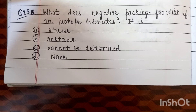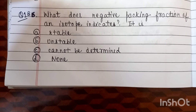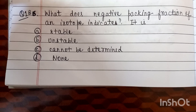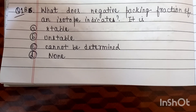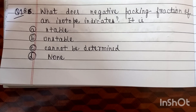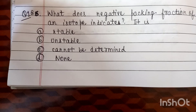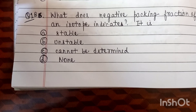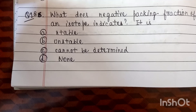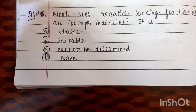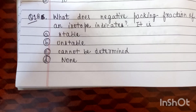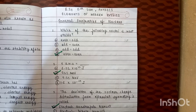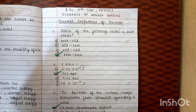Question number 18: what does a negative packing fraction of an isotope indicate? Option A: stable. Option B: unstable. Option C: cannot be determined. Option D: none. The correct option is option A, stable. Thank you so much for watching this video.